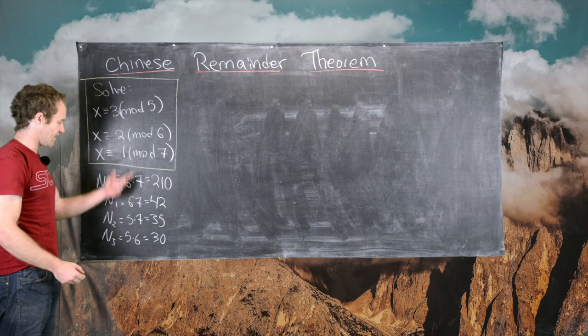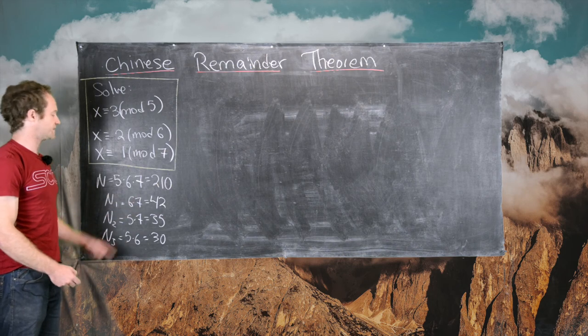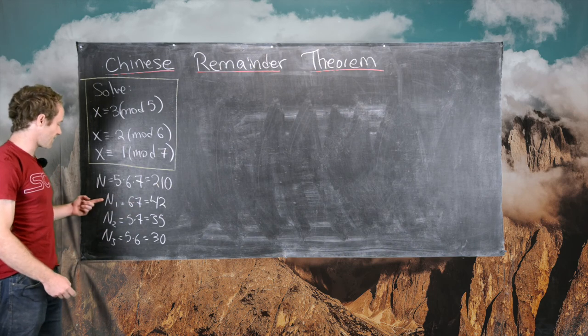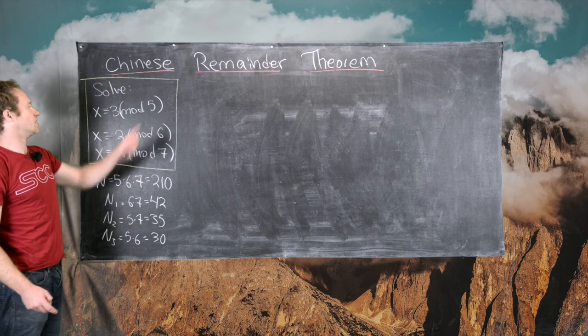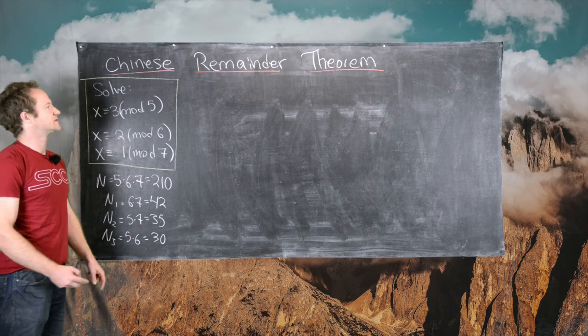So now we're all set. We have these numbers to work with, so the next thing we want to do is invert Ni modulo little ni.